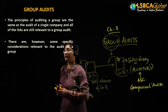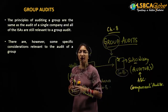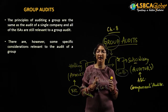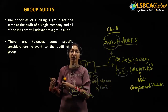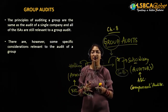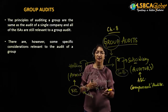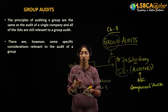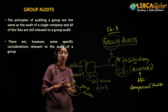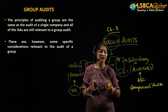Now let's start with the topic of group audits. The principles of auditing related to single company audits and group audits will be more or less the same. All the ISAs — the International Standards on Auditing — which are applicable to a single company will be applicable to the group company as well. But in the case of group audits, there are certain specific considerations which we have to keep in mind while auditing the books of the group company. Let's discuss what those specific considerations are, which are applicable only to group companies and not to single companies.